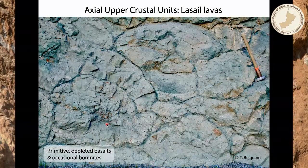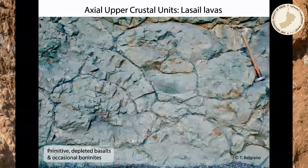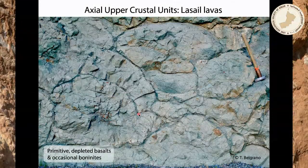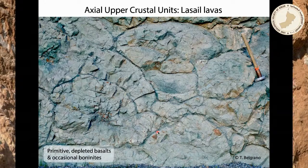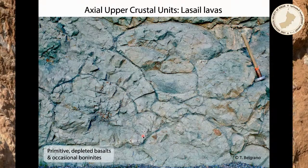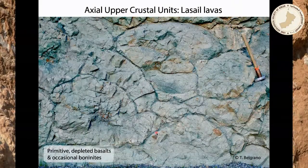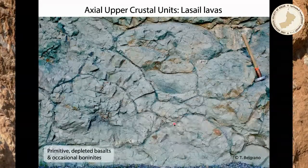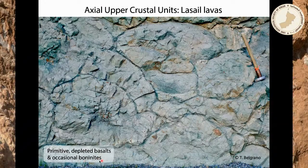The Lasile lavas are predominantly more primitive basalts than the Geotimes lavas — more magnesium-rich, which means less iron in general. After alteration, they take on a characteristic pale greenish-gray color compared to the reddish Geotimes. Looking at their trace element geochemistry, they are consistently depleted in incompatible elements like titanium, so much so that occasionally we even have boninites within this unit.